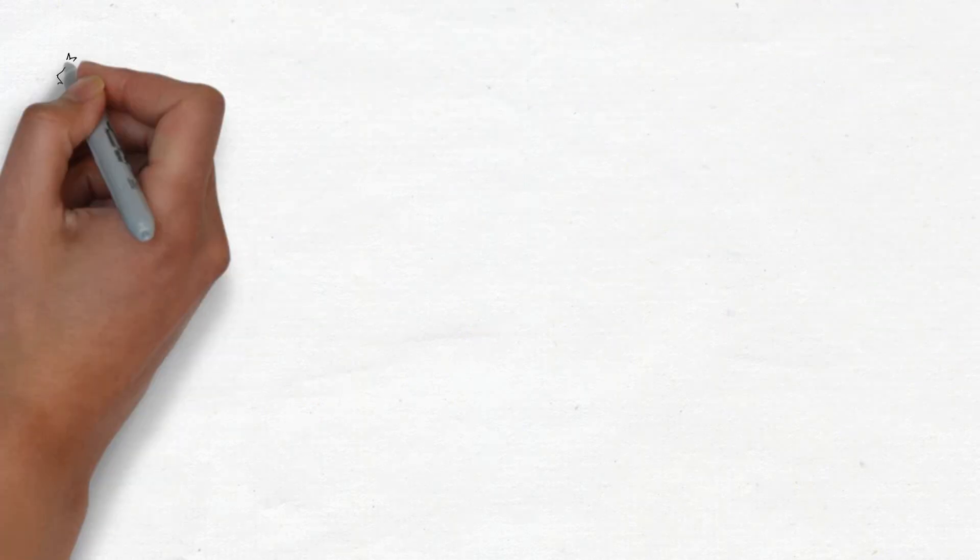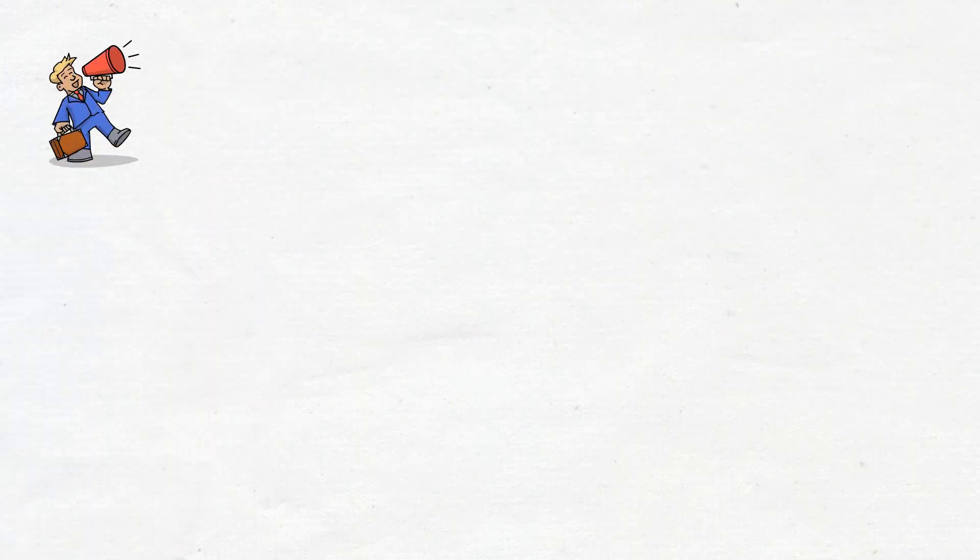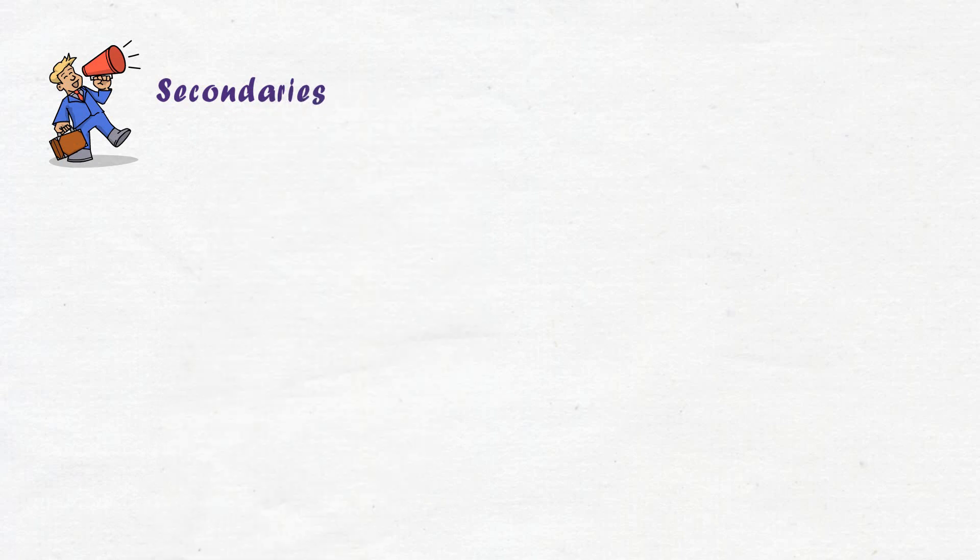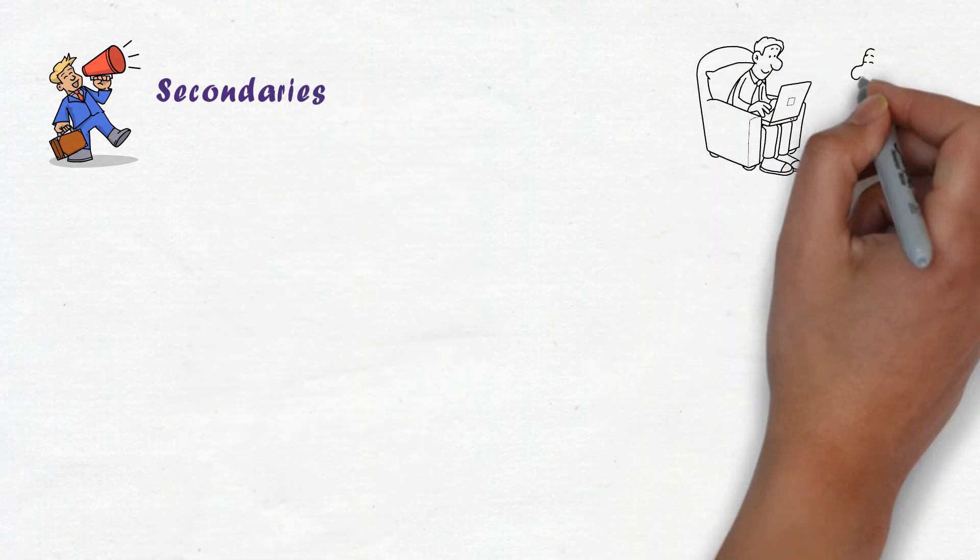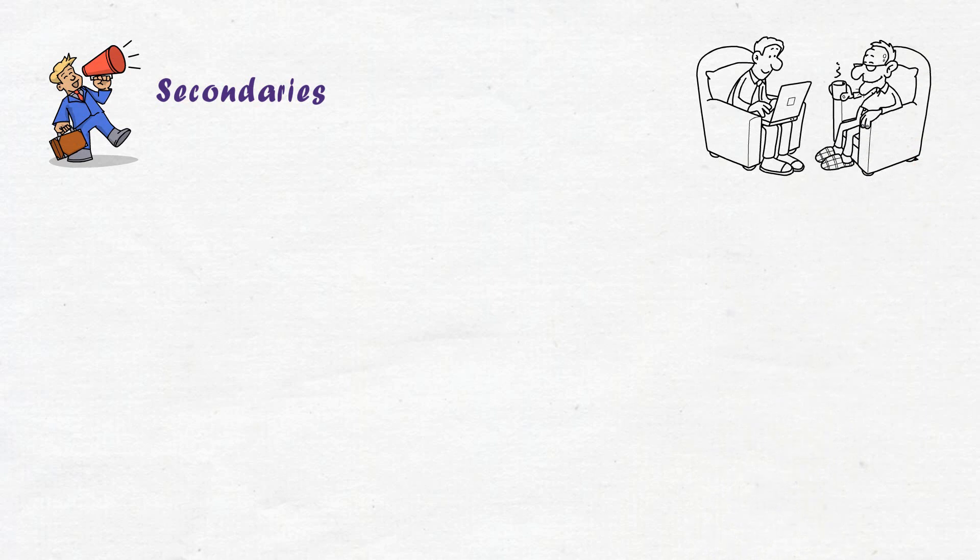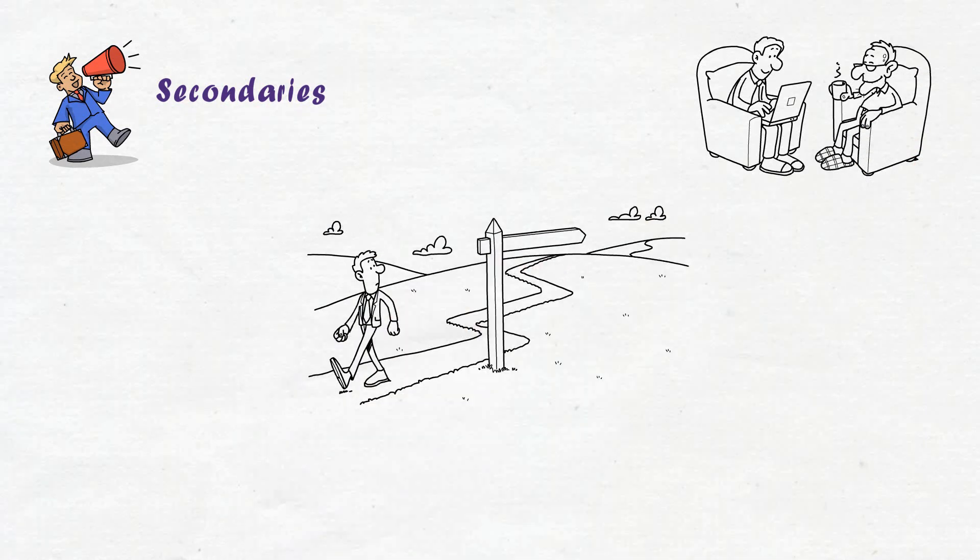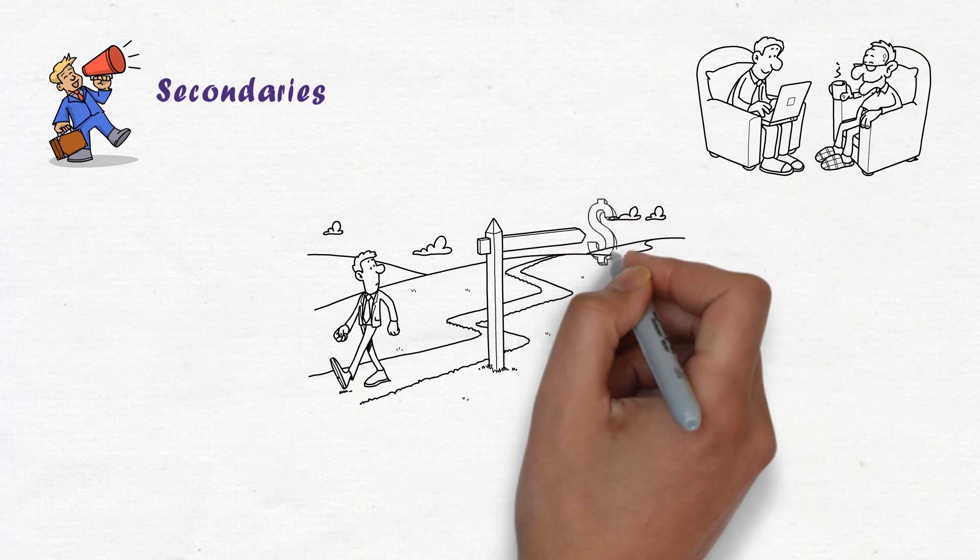Let's begin with exit strategies. The first strategy GP may use is secondaries. The secondary market allows private equity investors, also known as limited partners, to make an early exit, liquidate assets, or rebalance their portfolios.